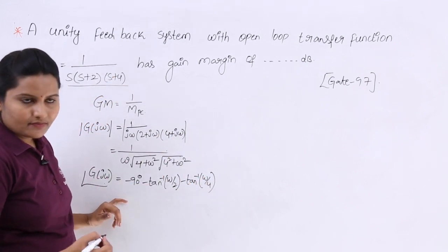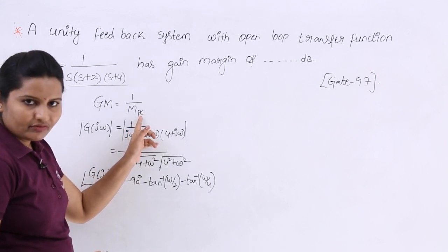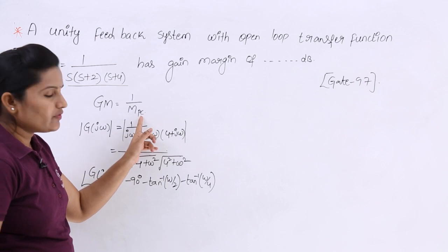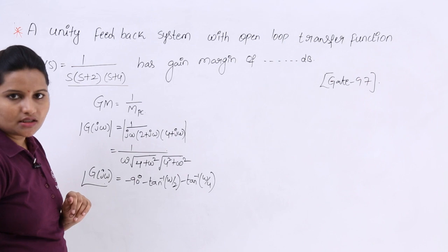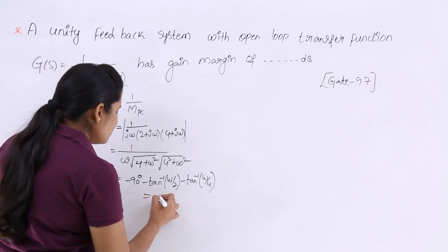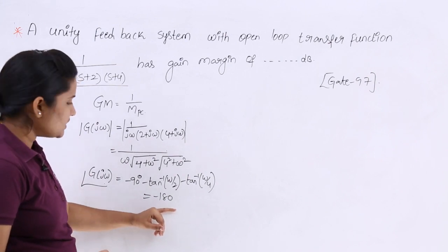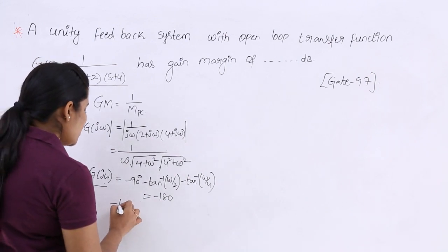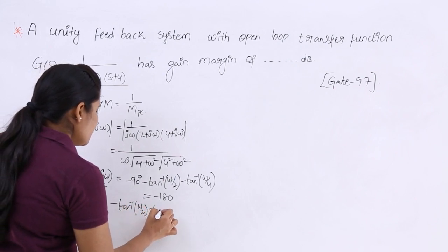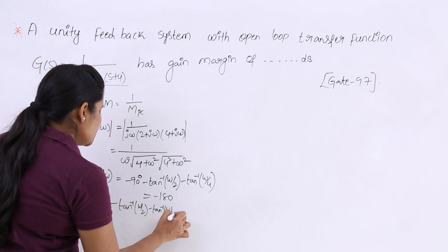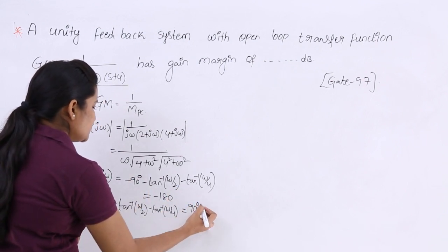The phase crossover frequency is the frequency at which the phase equals minus 180 degrees. Setting the phase equal to minus 180 degrees, we get: minus tan⁻¹(ω/2) minus tan⁻¹(ω/4) equals minus 90 degrees, so the two inverse tangent terms must sum to 90 degrees.